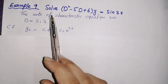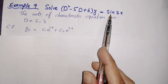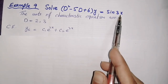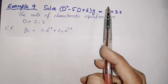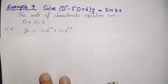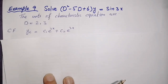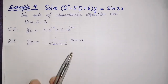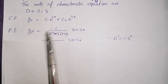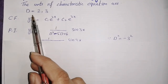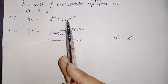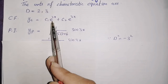Example 9 from Mathematical Methods by S.M. Yusuf: solve this differential equation. On the right-hand side we have a trigonometric function, i.e., sin is given. So first, find the complementary function. From the roots we can obtain yc = c₁e^(2x) + c₂e^(3x).